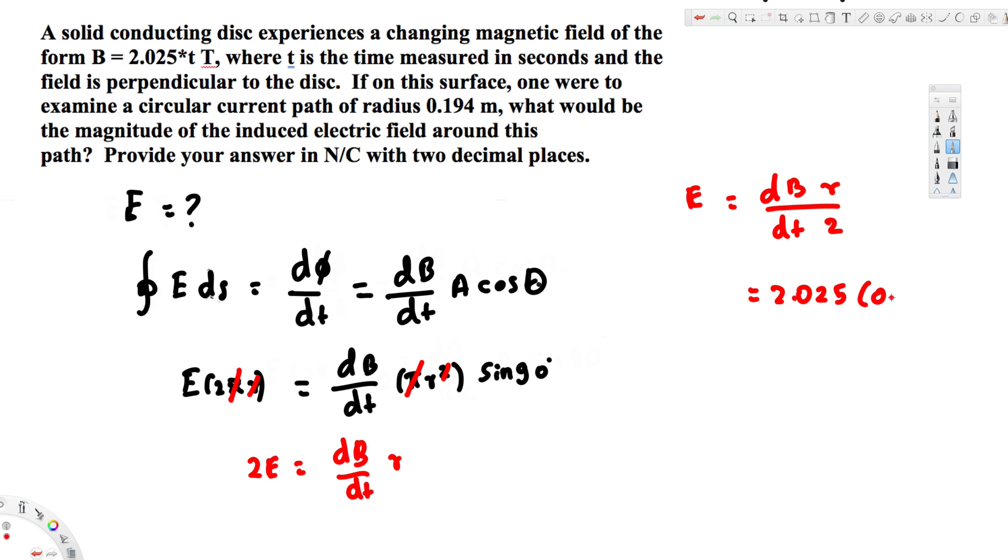So that is 0.194 divided by 2. If we calculate this, we will get 0.196425. In two decimal places, this is going to be 0.20 Newtons per Coulomb, and that's going to be our final answer. I hope this helps, thanks for watching.